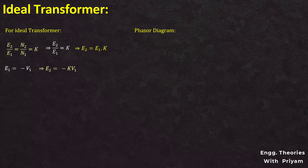Now let's draw the phasor diagram for this ideal transformer with no-load condition. First, we take the flux phi_mt as the reference. Both EMFs e1 and e2 are in phase with each other, and they both lag the reference flux phi_mt by an angle of 90 degrees. Both e1 and e2 are in antiphase with the supply alternating voltage V1, so they are 180 degrees out of phase with V1. That is why the self-induced voltage e1 equals minus V1, and the mutually induced voltage e2 equals minus k × V1. Depending on the voltage transformation ratio k, e1 can be greater than e2, or e2 can be greater than e1.